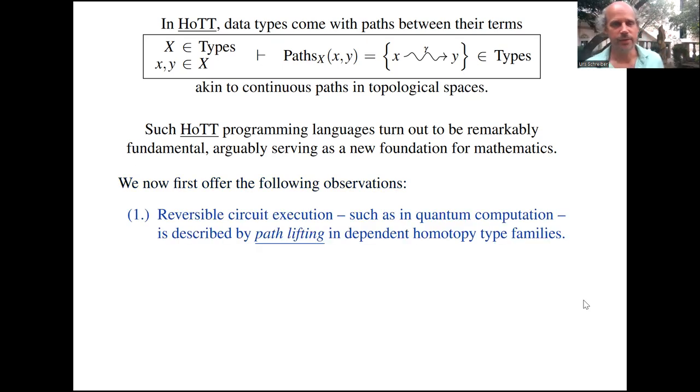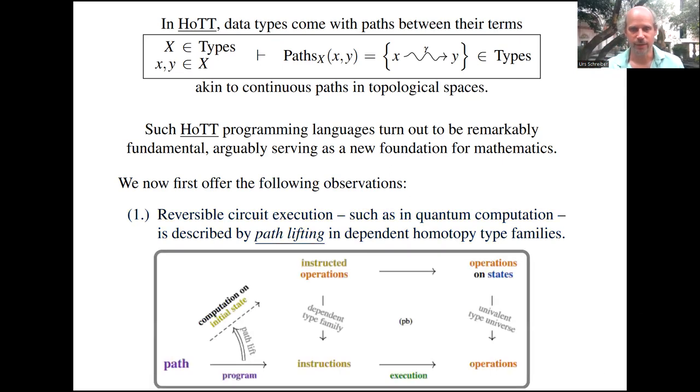So we make three observations to start with. First, it's kind of obvious once you have wrapped your mind around what's going on here. We observe that reversible circuit execution, such as is the case in quantum computation, is described exactly by this path lifting operation in dependent homotopy type families. That's actually the natural reflection of it, as shown in this cartoon here. You think of your base type, the paths in your base type, as being the names of gates, the instructions, and the lift of a path as being the execution of these instructions.